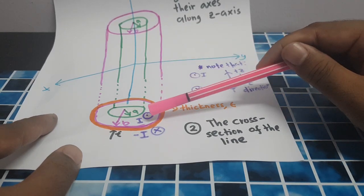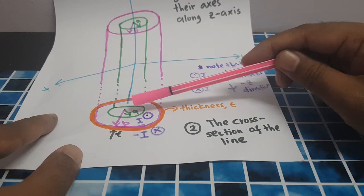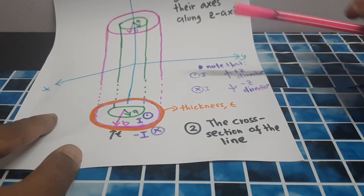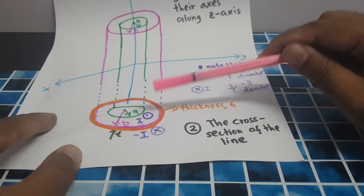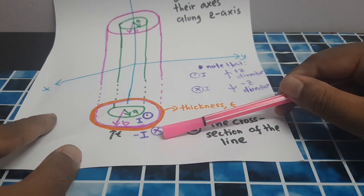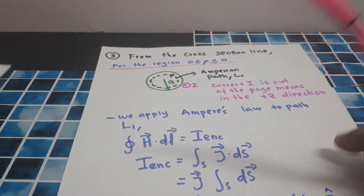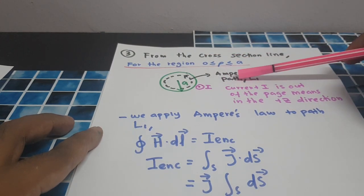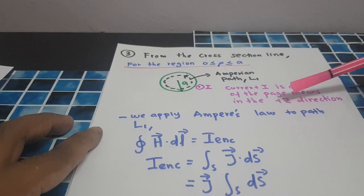The current flows in the positive z-direction between radius A and B, and in the negative z-direction through the outer conductor of thickness T. The current toward the positive z-direction is denoted by a dot inside a circle, and the current toward the negative z-direction is denoted by a cross inside a circle. For the region ρ between 0 and A, the Amperian path is L1, and the current I is out of the page, meaning in the positive z-direction.